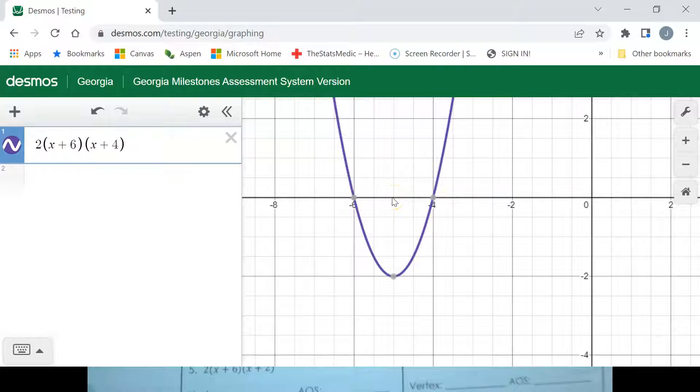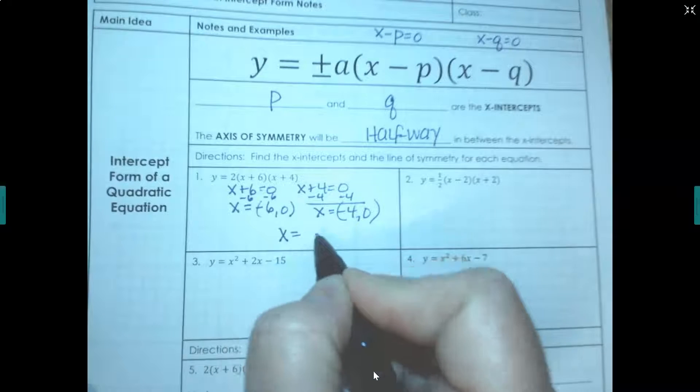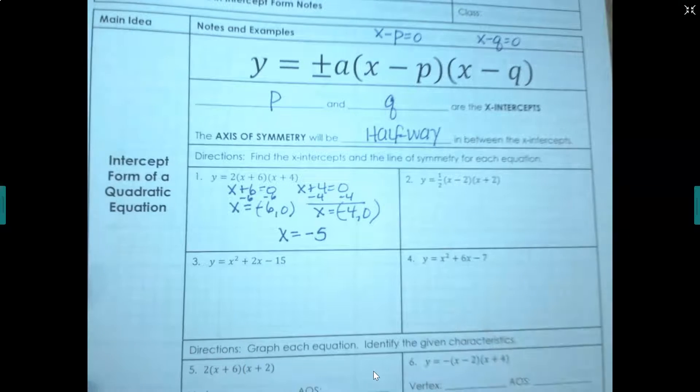So halfway between them, that's your axis of symmetry because that's where your vertex is. And remember your axis of symmetry is the same as the x value of your vertex. Halfway between negative 4 and negative 6 is negative 5. So our axis of symmetry is at negative 5.